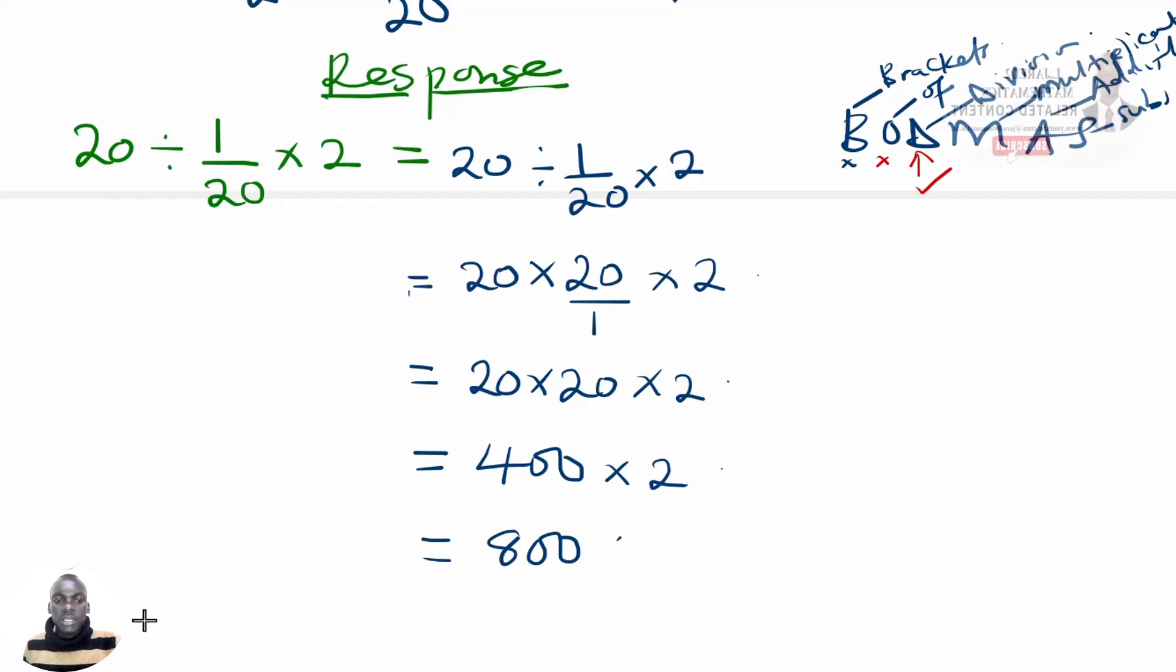Therefore, the correct answer to the expression 20 divided by 1 out of 20 multiplied by 2 is 800. And thanks for watching. Goodbye. See you again in the next lesson.